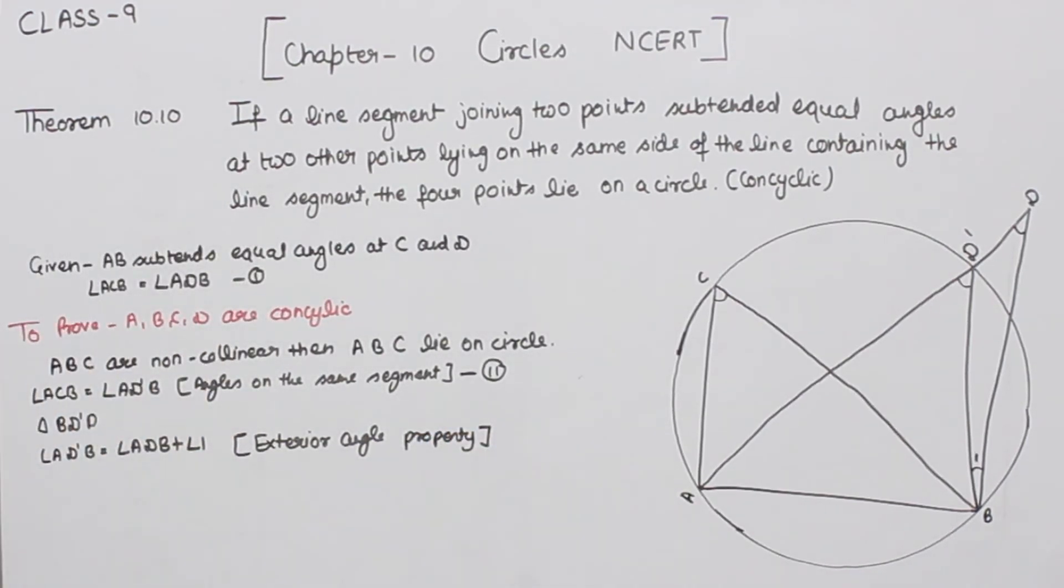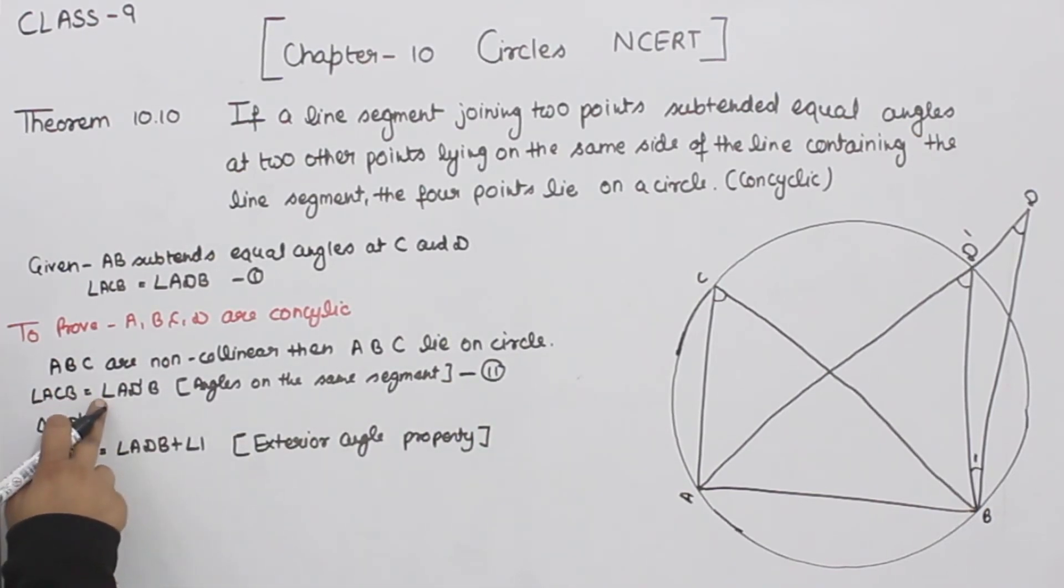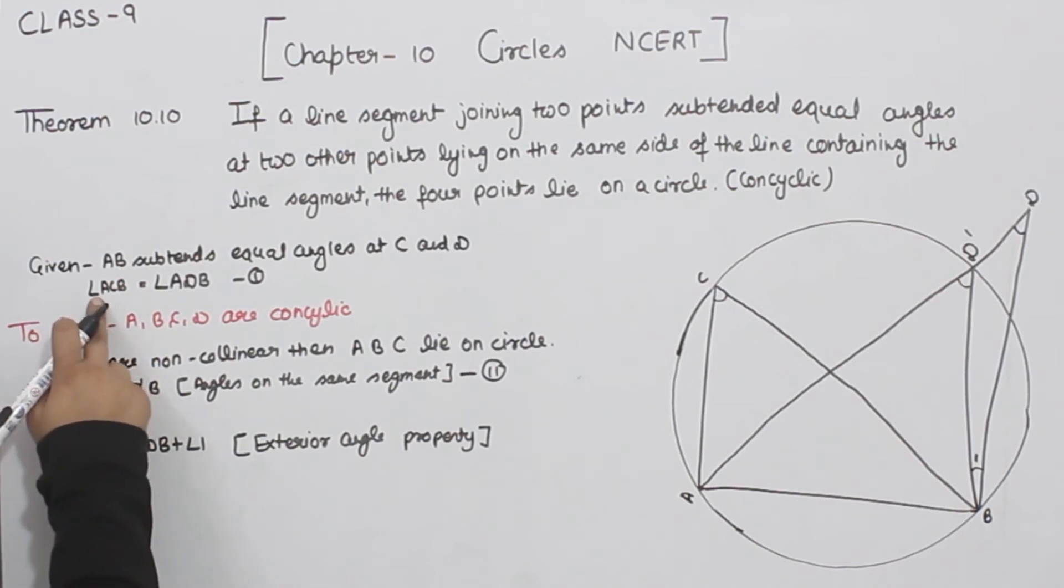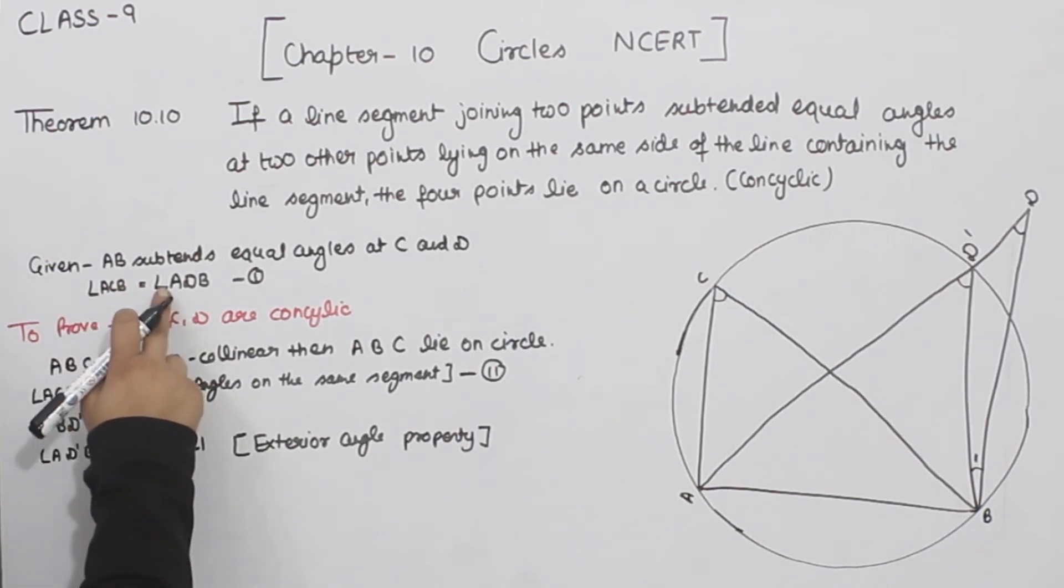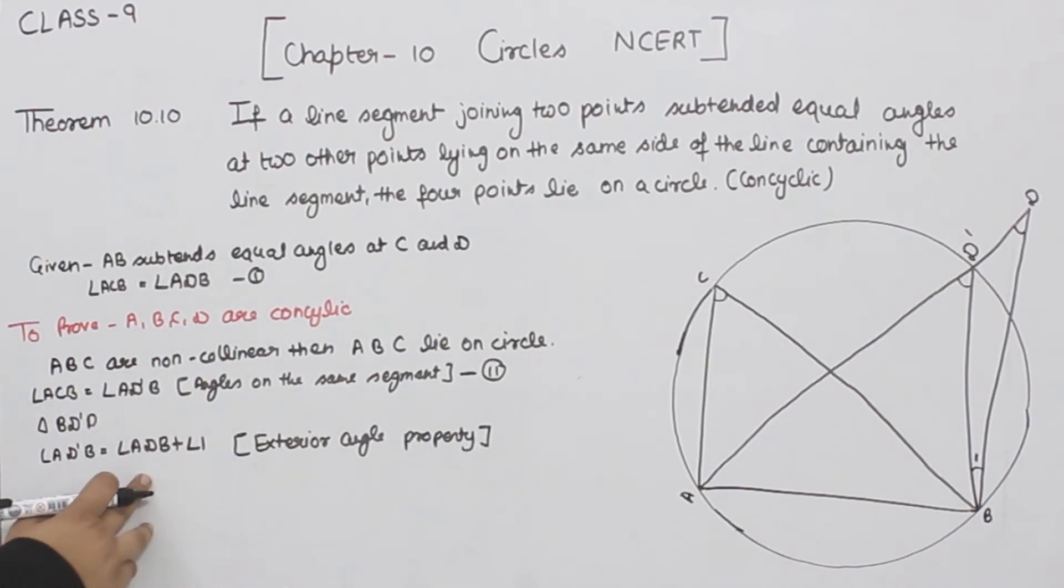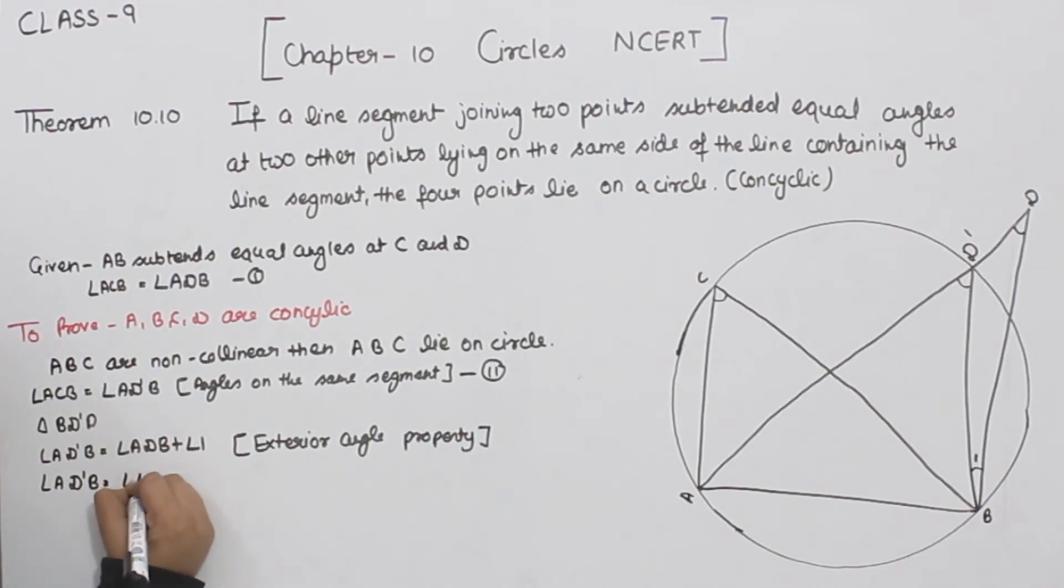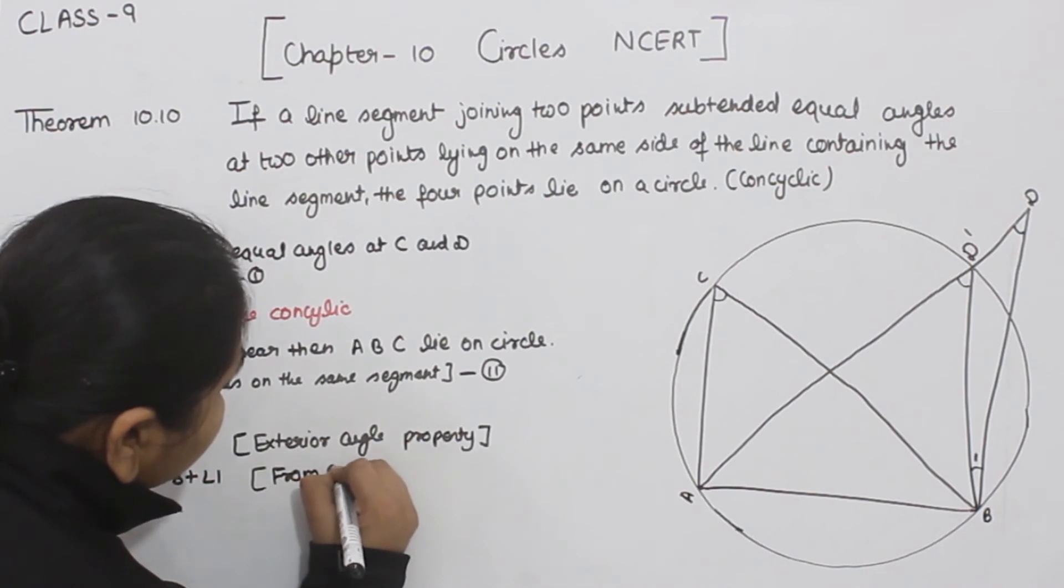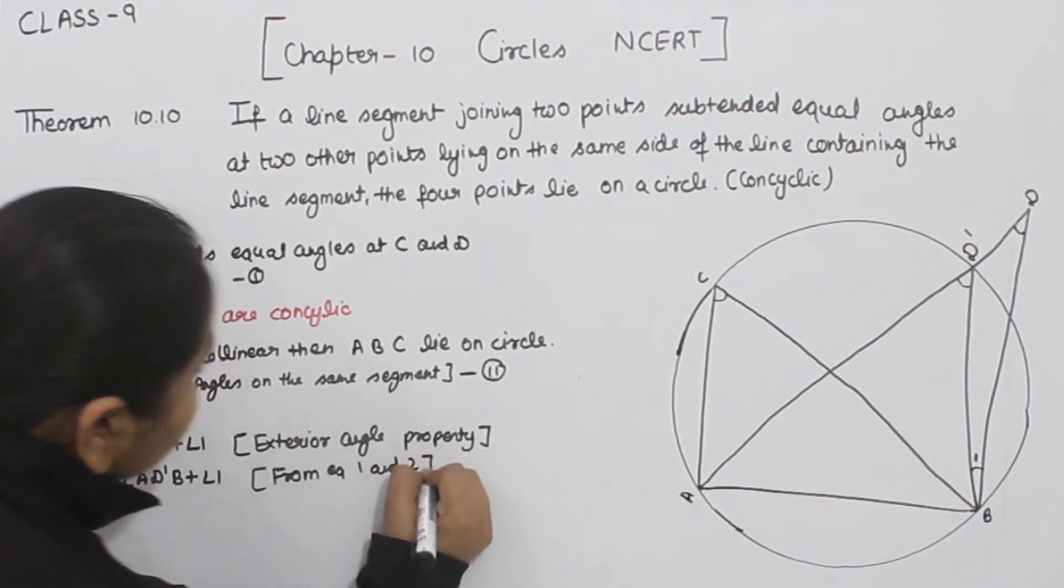Now as per equation number two, angle ACB is equal to angle ADB, and angle ACB is also equal to angle AD'B. So at the place of AD'B, I am going to write ACB plus angle number one. From equations one and two.